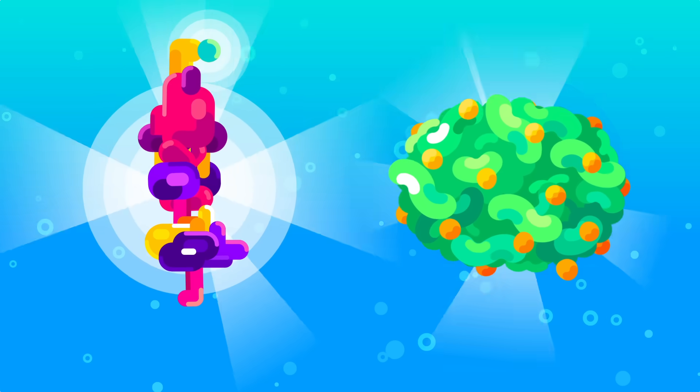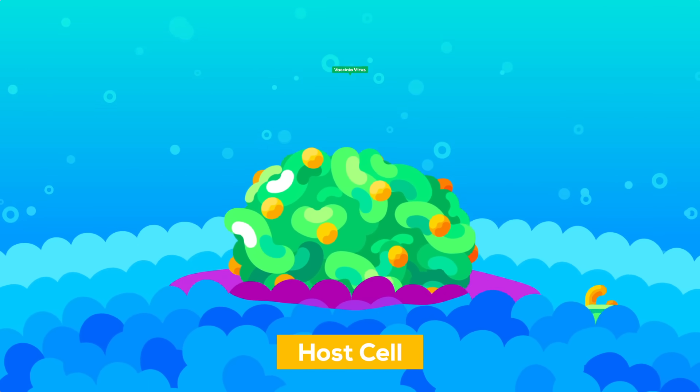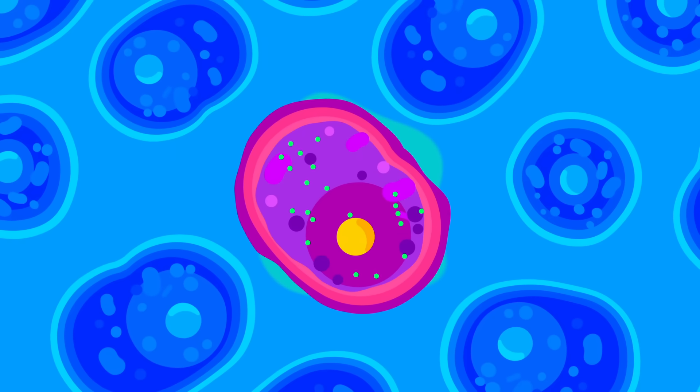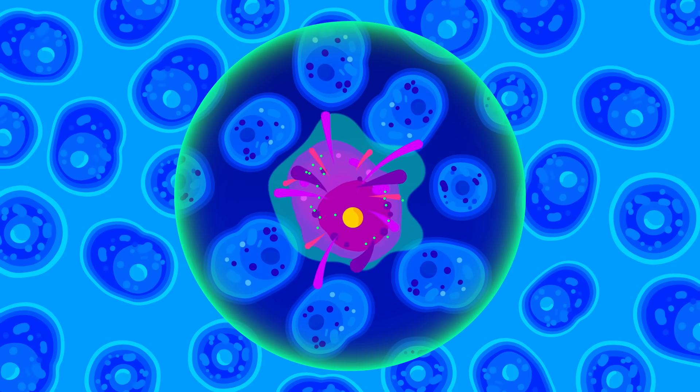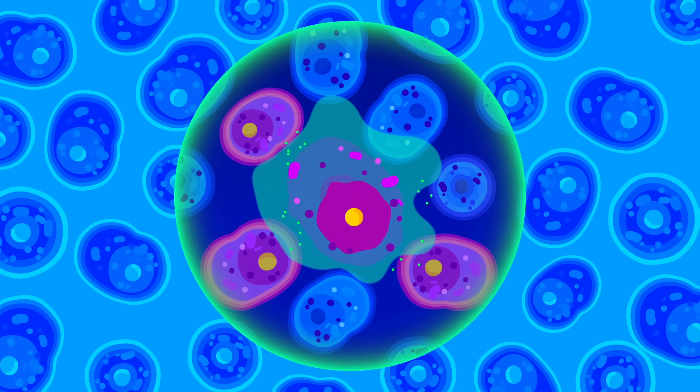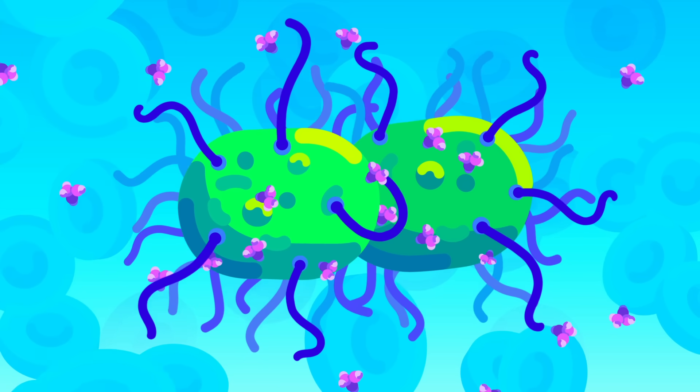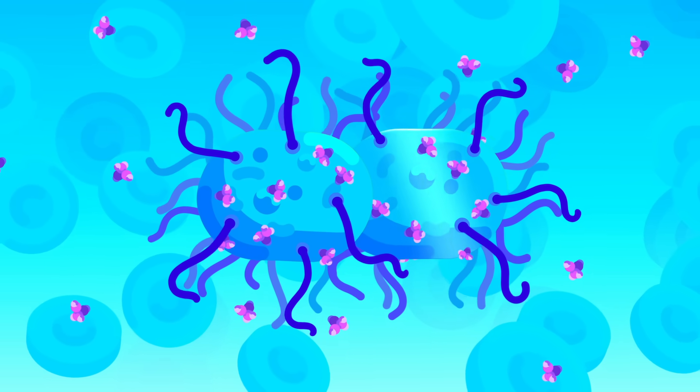For example, when the vaccinia virus infects a cell, it forces it to produce a protein that shuts complement activation down. This way, the virus creates safe zones around the cells it infects. When it kills them and tries to infect more, it has a higher chance of being successful. Or some bacteria, for example, can grab certain molecules from the blood that keep the complement system calm and make themselves invisible.